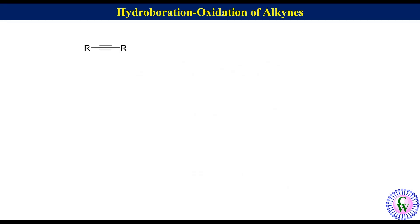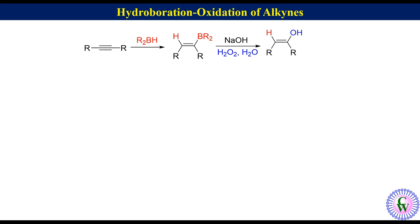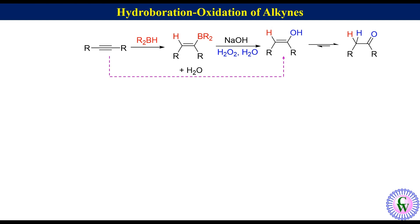The Hydroboration Oxidation of Alkynes is a two-step process in which an alkyne is first allowed to react with hydroborating agents to produce alkenyl borane, which after oxidation with alkaline hydrogen peroxide produces enol. The enol then tautomerizes to its more stable keto form. Thus the overall transformation is equivalent to the addition of a water molecule to an alkyne.